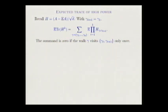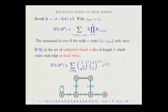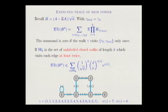Since the variables are centered and independent, the expectation is zero if any edge is visited only once. So you reduce the sum to closed walks visiting each edge at least twice. For unlabeled closed walks visiting v vertices, you get n^v choices for labeling, a factor of (1/sqrt(d))^k from the normalization, and each edge visit contributes a factor of d/n. So the contribution is essentially controlled by the number of vertices visited.